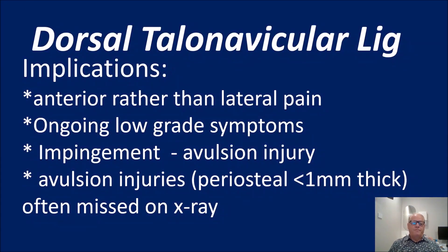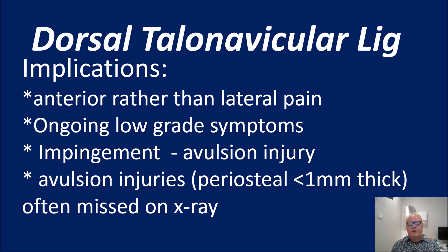So what are the implications? These are anterior rather than lateral pain. These tend to have ongoing low grade symptoms — they go on for month after month. These are the ones that come back for a second opinion, saying there must be something else going on, somebody's missed something on an x-ray. Anterior impingement is a big flag for avulsion injury. If they go into a deep squat — hyper dorsiflexion — they get pain. Avulsion injuries, particularly for the periosteum, are less than one millimetre thick and are often missed on x-ray.